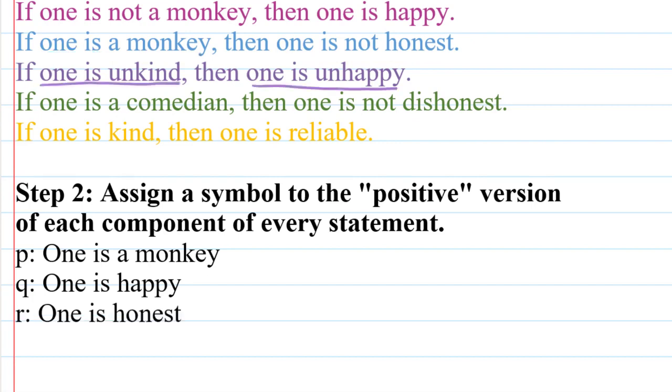Next I have if one is unkind, then one is unhappy. I don't have any components defined to be anything to do with kindness, so I'm going to define S to be one is kind, but I do have something about happiness, right? One is happy is already Q, so one is unhappy is a negation of Q. I don't need to define an entirely new letter, and in fact that would actually mess us up.